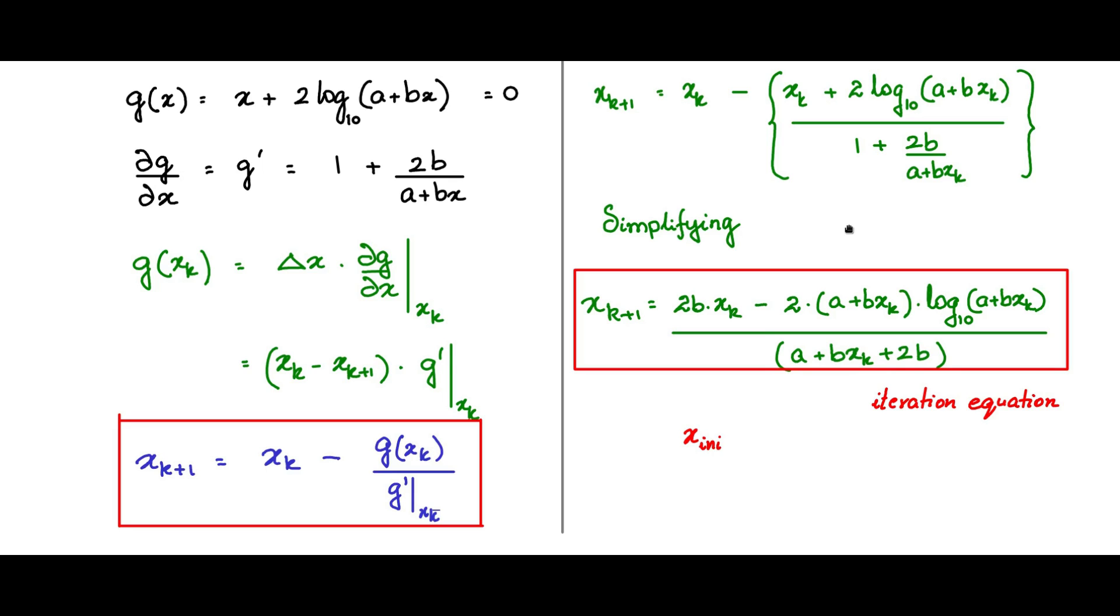What should be the starting value of x k, x k initial? I will take it as 1 by root of f and that f is 1 by root of 0.1. f is nothing but 0.1 what I have taken. How do we arrive at this value?